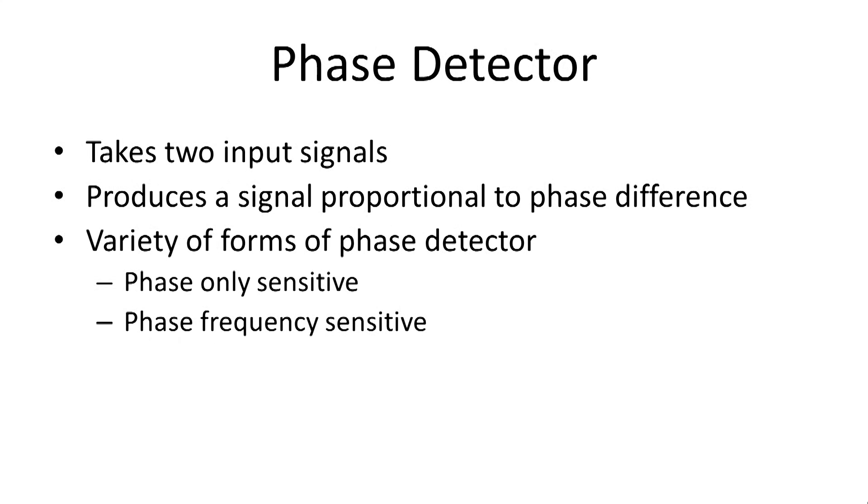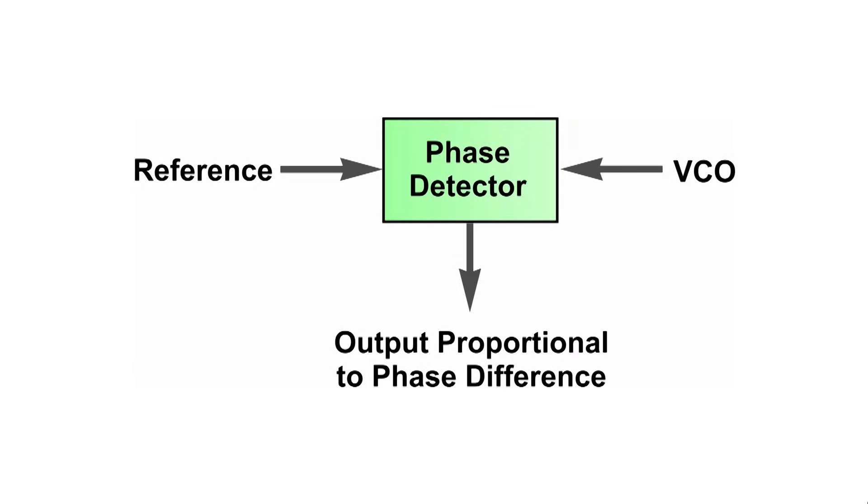The first one is the phase detector. In many ways this is the key element of the loop. It takes in signals from the reference and the voltage-controlled oscillator and produces a voltage proportional to the phase difference between these two signals.